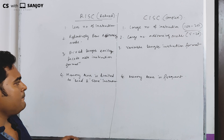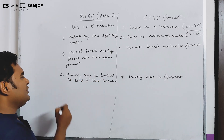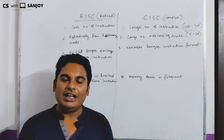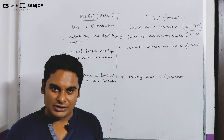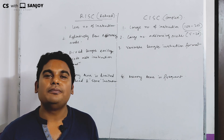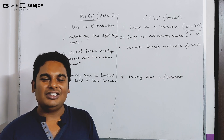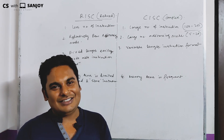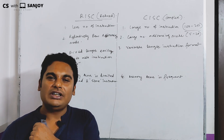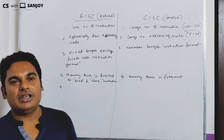Memory access is limited to load and store instructions in RISC. When memory access is limited, the operand is stored in a CPU register. Where do we store the operand? In computer registers. We store the operand temporarily in a register. That is called a register — we store the operand temporarily in the CPU register.